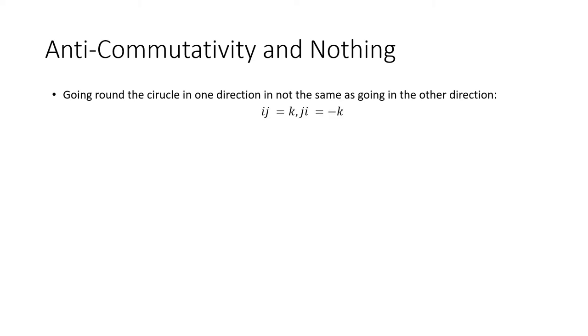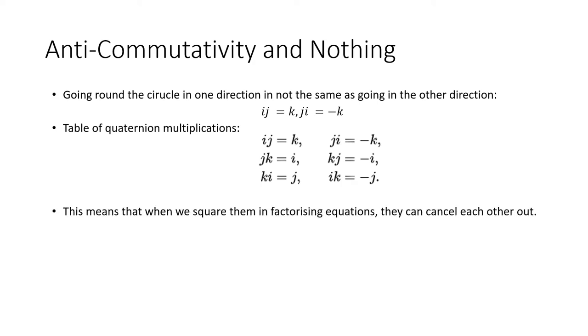But even more interesting is the fact that if you reverse their order, they don't produce the same result, which is completely unlike how we normally think about multiplication. We think that multiplication is commutative, and the quaternions are anti-commutative. It's this anti-commutativity which makes Peter's equation work.